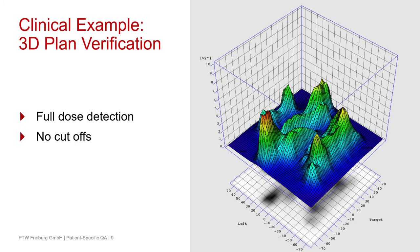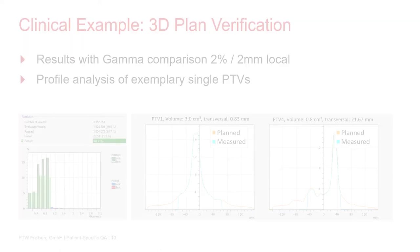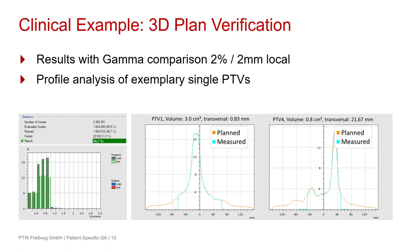Here you can see our 3D dose measurement with our software VeriSoft, and because of the large detector size you have full dose detection with no cut-offs. To analyze this clinical example, we used the local gamma criterion with 2% and 2 mm, and the passing rate was nearly 99%. You can also see a profile analysis of exemplary single PTVs — in the middle the PTV with the large volume, on the right the PTV with the small volume — and you can see that the measured and planned dose fit quite well.